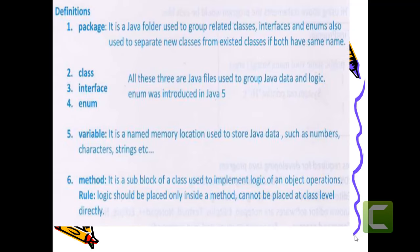A variable is a named memory location used to store Java data. For example, if I define the number 6 to a variable 'a' which is of integer type, it will store in a memory location using 2 bytes of memory with the name 'a'. That is a variable — used for memory locations to store Java data. A method is a sub-block of a class used to implement the logic of an object's operations.